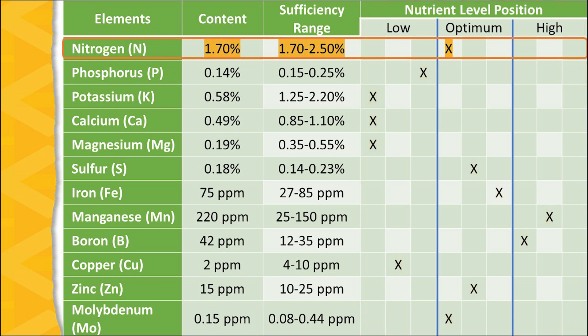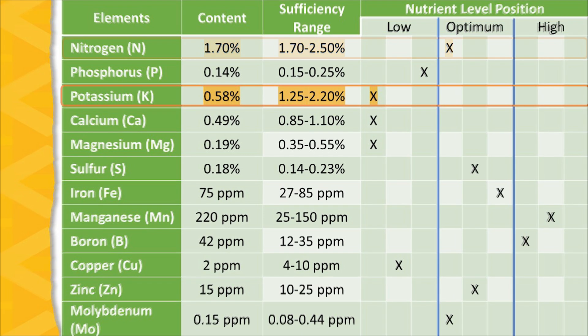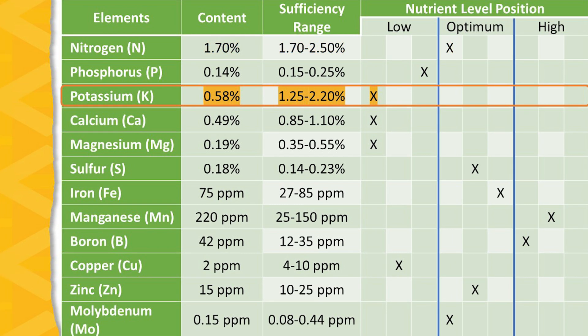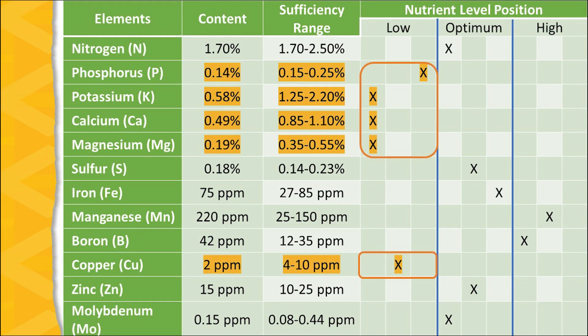For example, if you look at nitrogen, this particular sample had a content of 1.7% compared to a sufficiency range of 1.7 to 2.5%, so nitrogen in this sample would be considered optimum. In the case of potassium, the sample had a content of 0.58% and the sufficiency range of 1.25 to 2.2% indicates that potassium is in a low situation in this particular foliar sample. The actual contents compared to the sufficiency ranges can help reveal which nutrients may be in short supply and can be used to adjust a fertility management program to address any perceived shortages.